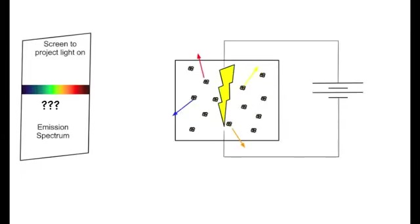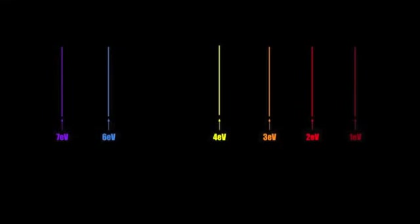So for the emission spectrum, instead of seeing the whole electromagnetic spectrum with a few lines missing, you're going to only see a handful of lines that correspond to the energies of those photons that that atom will emit.